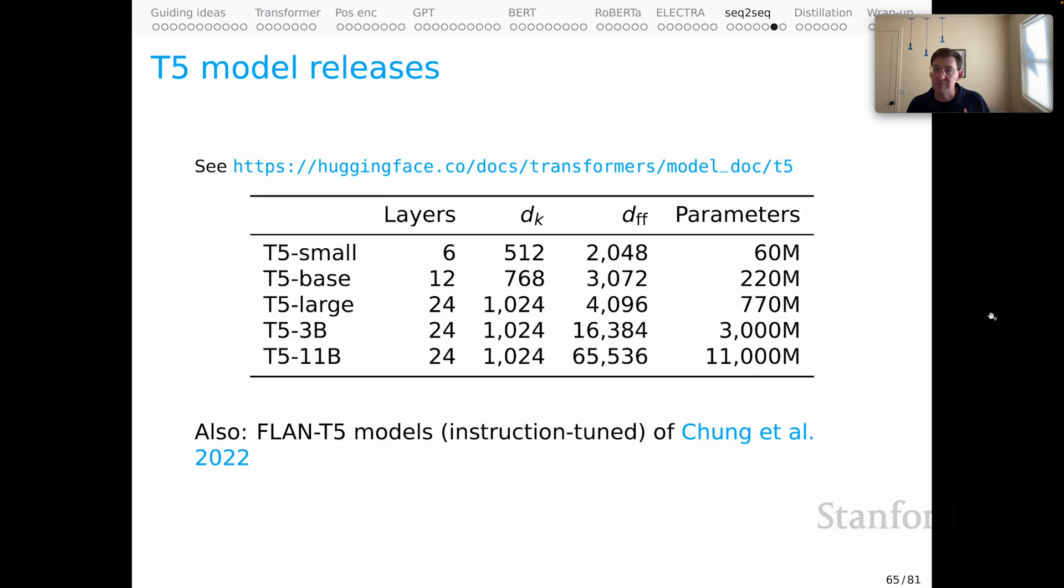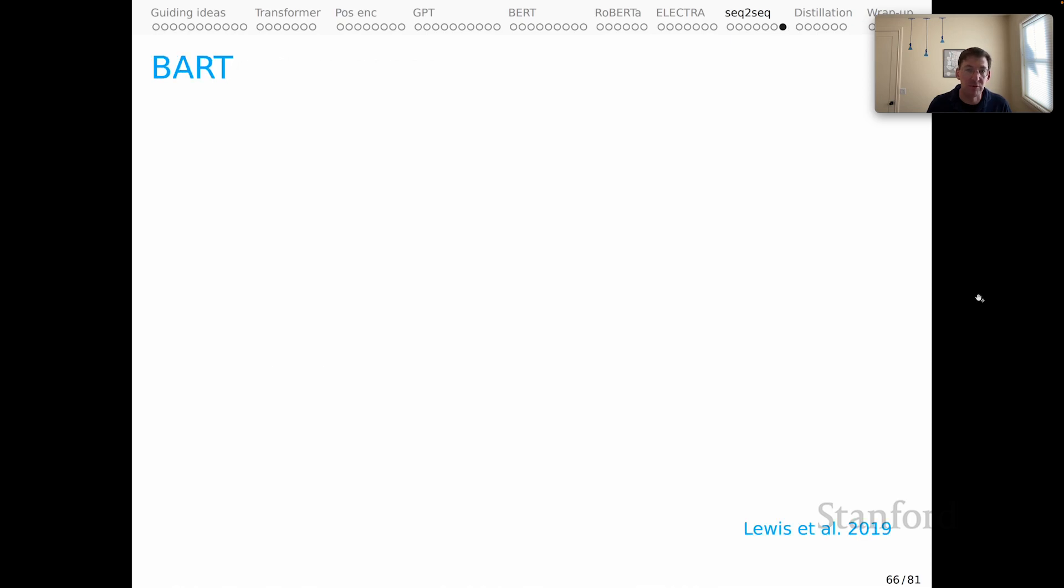For T5, we have lots of model releases as well, which has been tremendously empowering. This is a sample of the models that are available on Hugging Face, and you can see that they range from very manageable 60 million parameter models on up to really large 11 billion parameter releases. Relatedly, the FLAN T5 models are variants of the T5 architecture that were specifically instruction tuned, and that's a set of methods that we'll talk about in the next unit of the course.